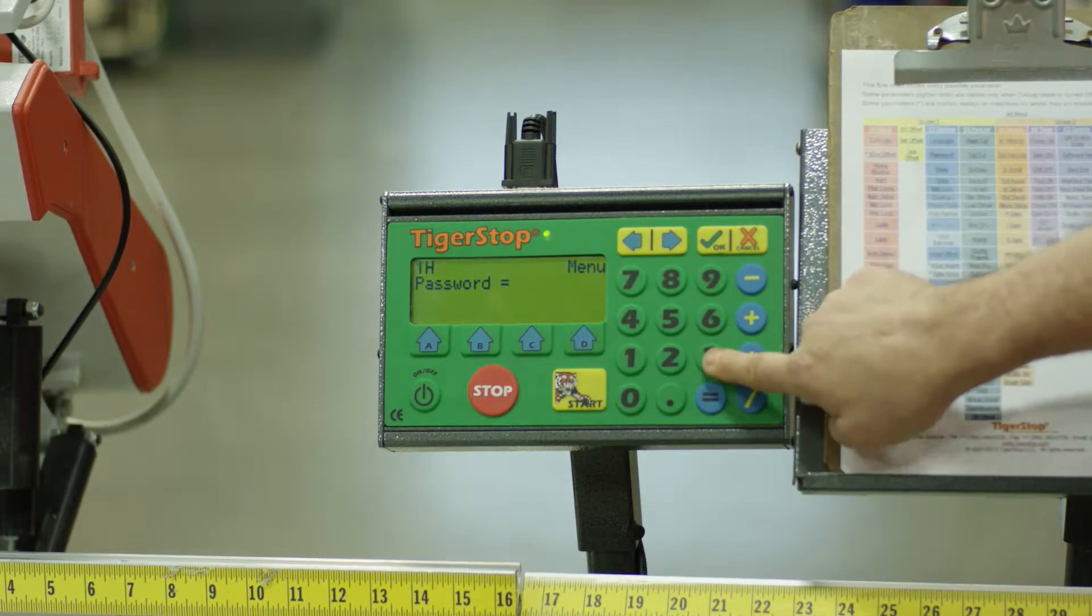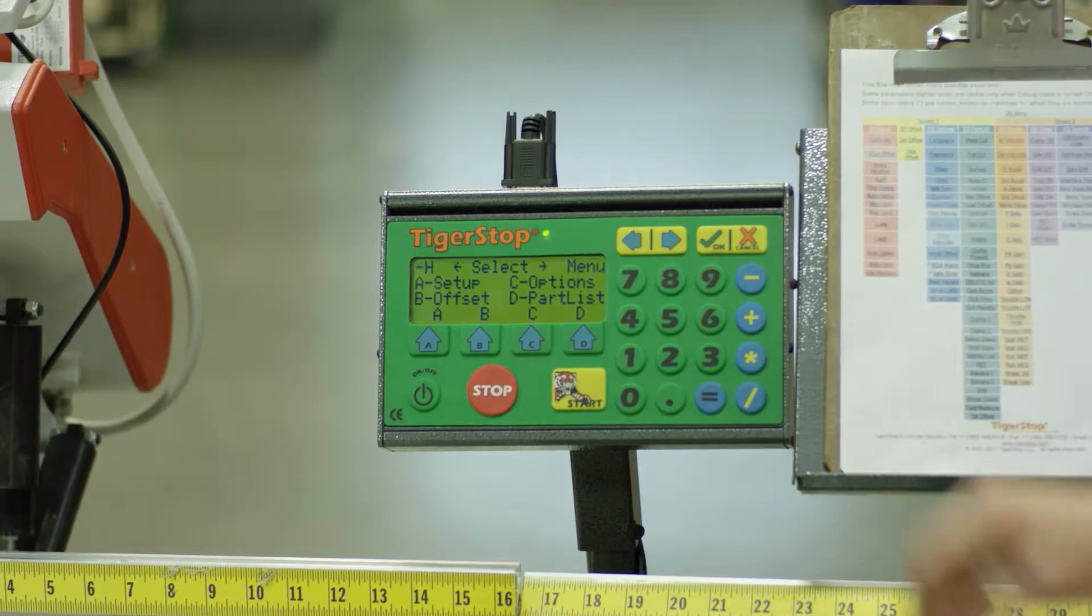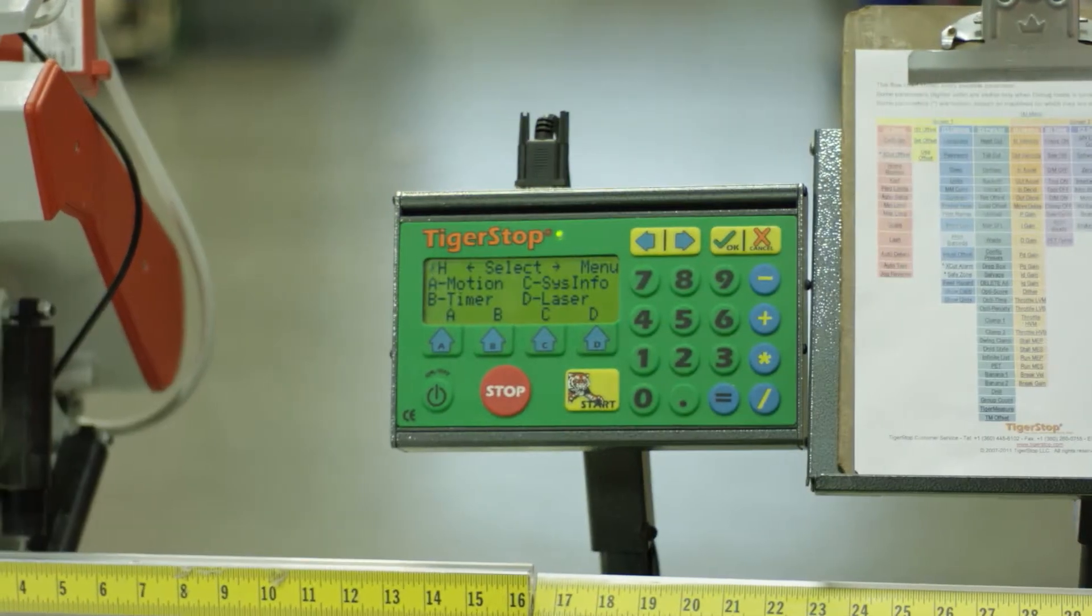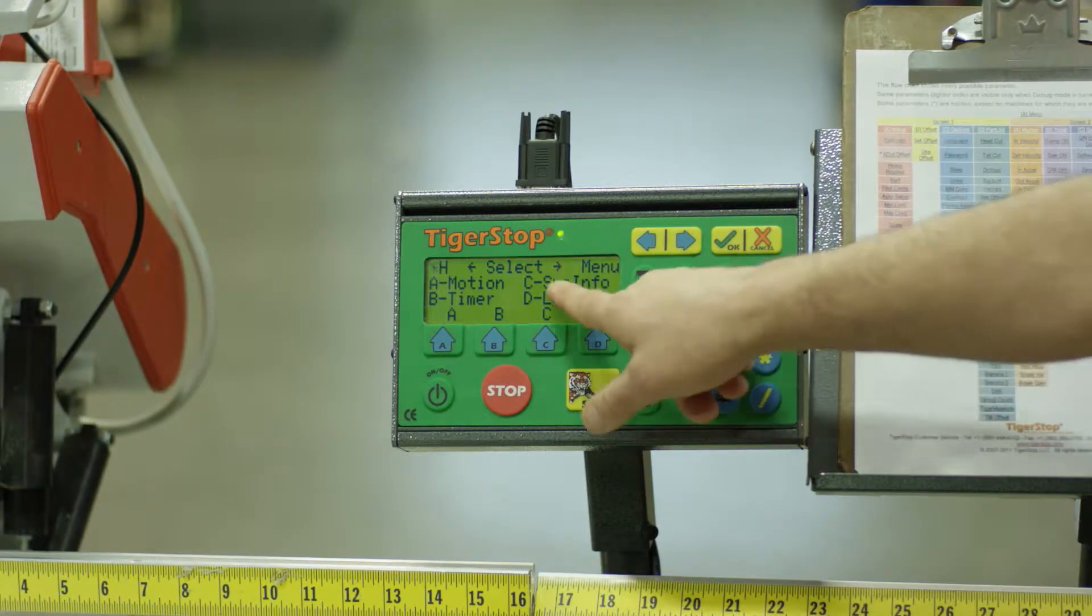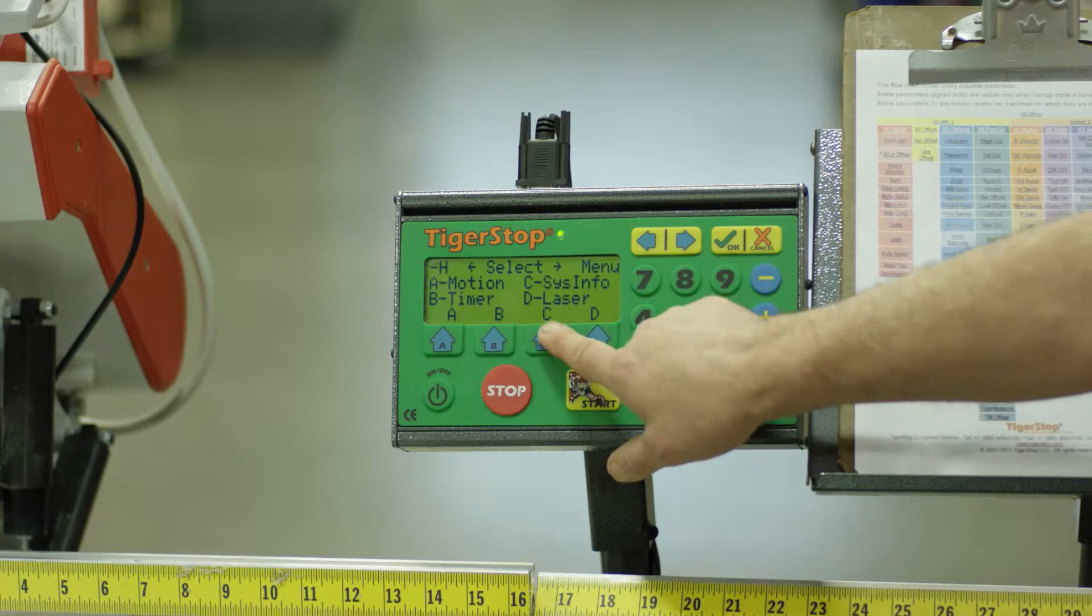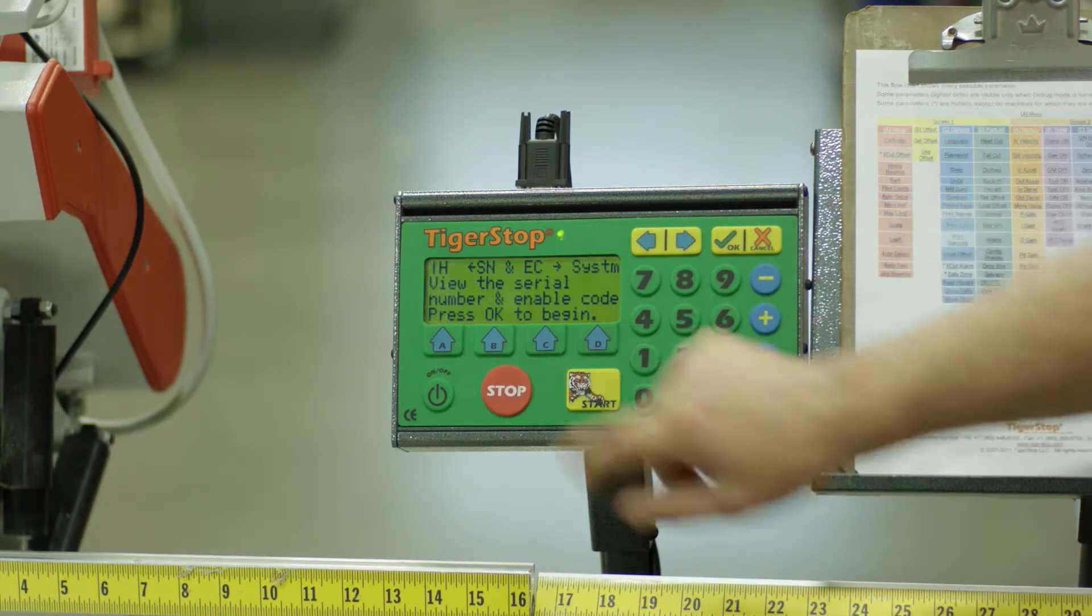We're going to pick and go over to the system information, which is menu number two. You'll see system information is button number C. I've chosen that.